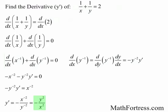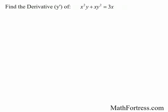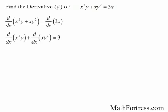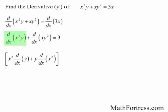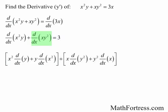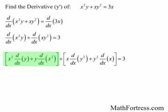Let's try the next one. Find the derivative of x squared times y plus x times y squared equals 3x. Like always, we take a derivative of both sides and distribute. We need to take the derivative of x squared times y — notice that we have a product of two different functions, so we need to apply the product rule. The next term also has a product of two functions, so we apply the product rule there too. The derivative of 3x is just equal to 3. Applying the product rule with f(x) = x squared and g(x) = y gives us x squared times y prime plus y times 2x.